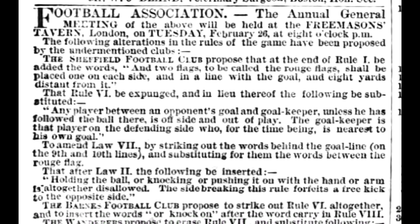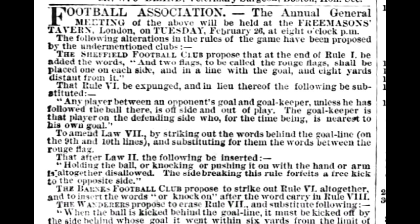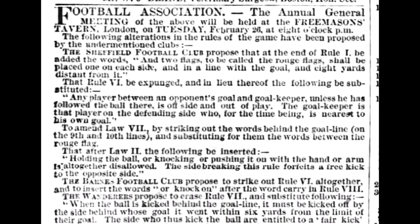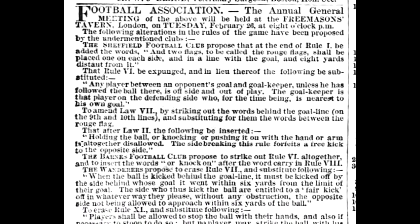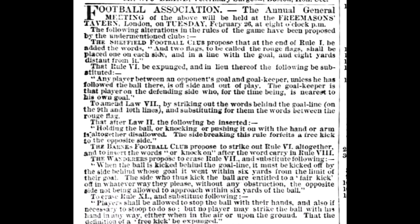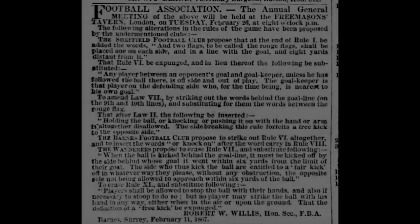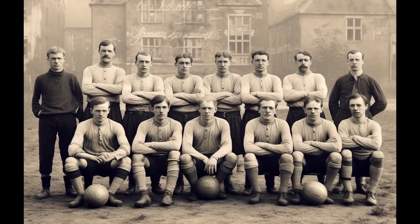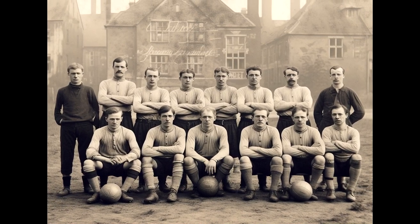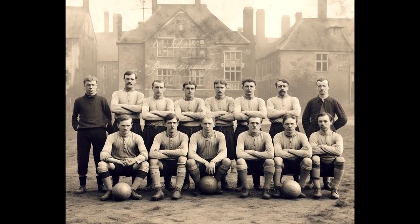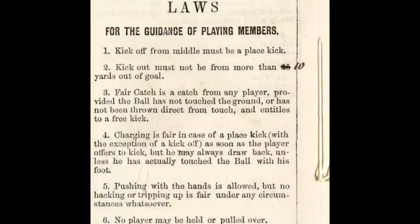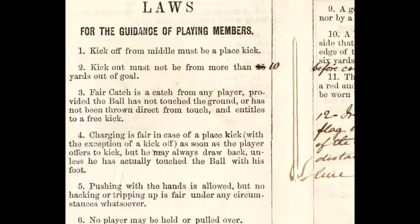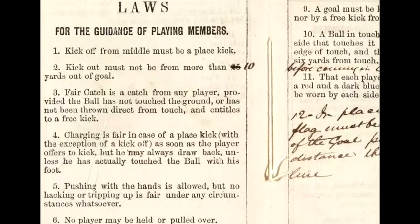It was in 1863 that representatives from several different football clubs met in London to form the Football Association, or FA, the world's first official football body. The FA held six different meetings, attempting to get the nation's schools to join the association, but most of those early efforts failed. As a part of those meetings, rules were published by the FA through some tough negotiation.